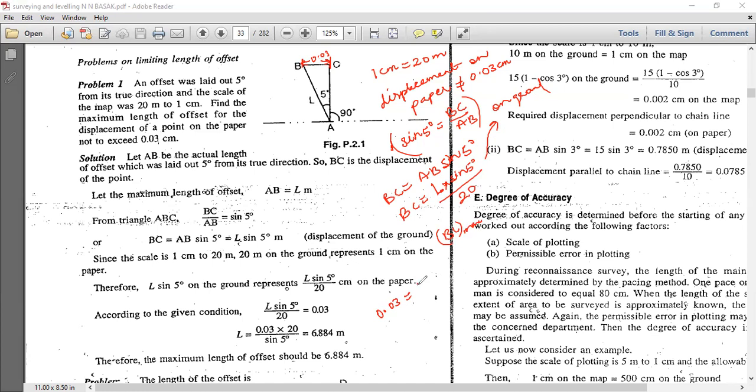You will get L sin 5 degrees divided by 20. So your maximum length will be 20 into 0.03 divided by sin 5 degrees.